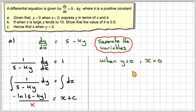Now, when x is 0, y is 0, so we get minus ln of 5 minus k times 0 divided by k equals 0 plus c, which gives that c will be minus ln of 5 over k.